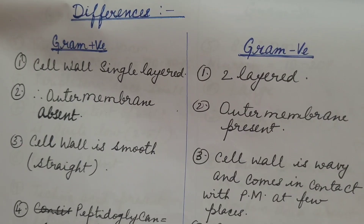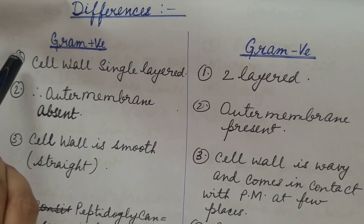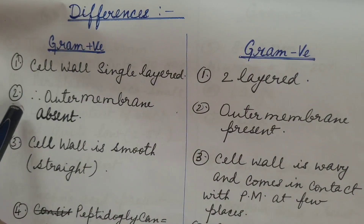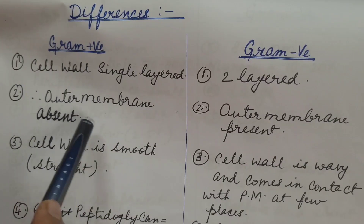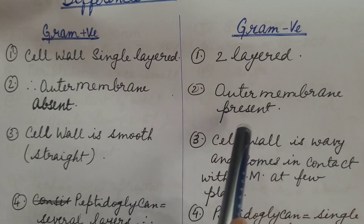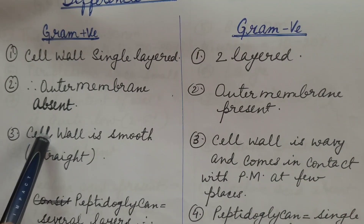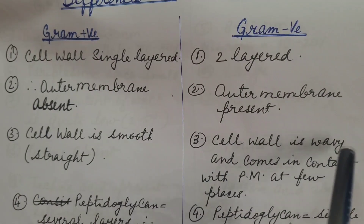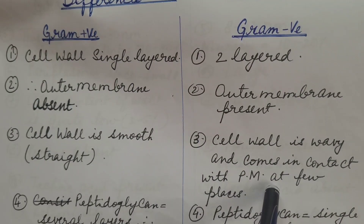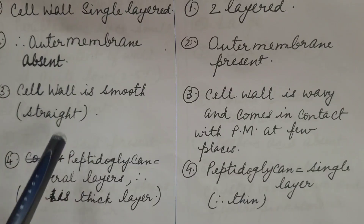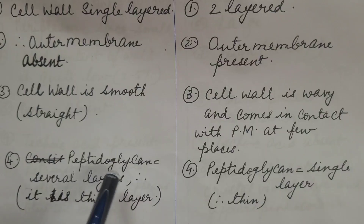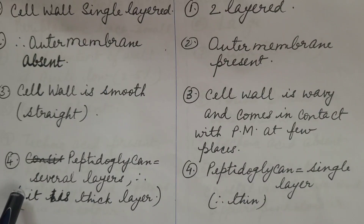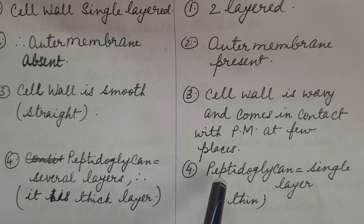Now let us discuss the differences between gram positive and gram negative bacteria. In gram positive bacteria the cell wall is single-layered; in gram negative bacteria it is double-layered. In gram positive bacteria the outer membrane is absent; in gram negative bacteria the outer membrane is present. The cell wall of gram positive bacteria is smooth and straight, whereas in gram negative bacteria it is wavy and contacts the plasma membrane at a few places. In gram positive bacteria, peptidoglycan is several layers thick — 20 to 80 nanometers — with murein or peptidoglycan content of 70 to 80 percent of the cell wall.